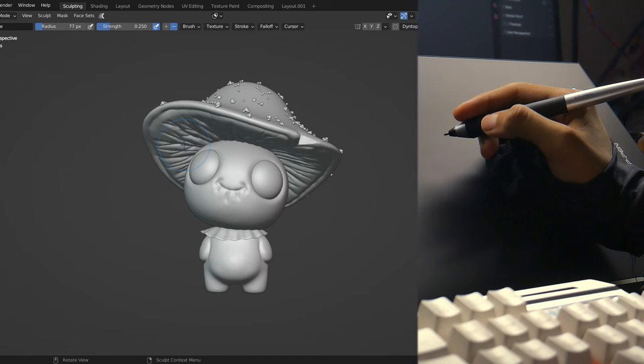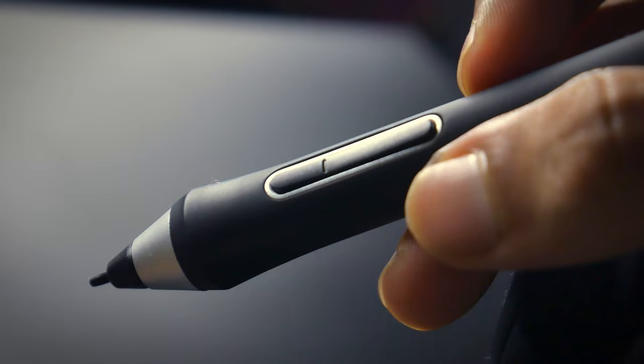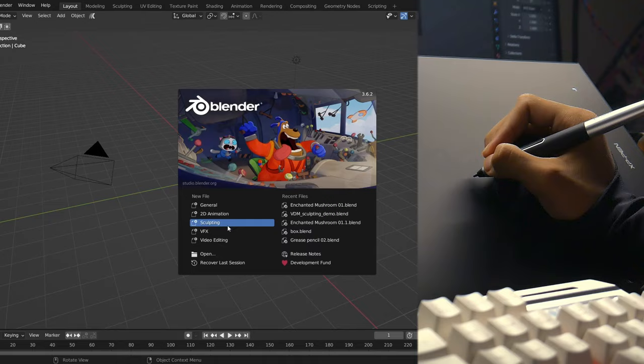So that you can rotate around the view by holding the button and moving around the pen. And I've set this button for right click. Now let's open Blender and create a new sculpting scene.